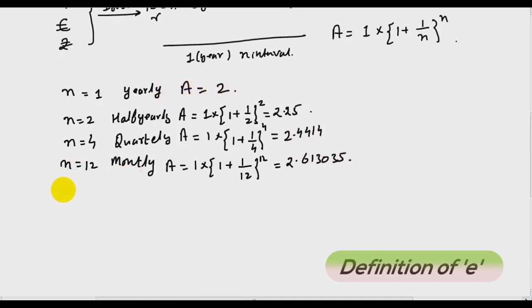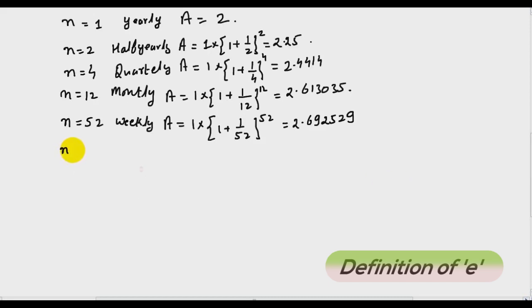Similarly he extended this to every week also. So if n is equal to 52 it becomes weekly, 52 weeks, and we get 2.692529. Now n is equal to daily, so 365, and this is 2.71456.